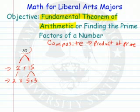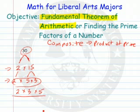We have now written 30 as a unique product of prime numbers. Now, most people would write this as 2 times 3 times 5 in the prime factorization form. But that's the fundamental theorem of arithmetic.